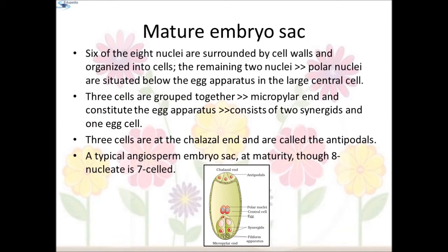In the mature embryo sac, six of the eight nuclei are surrounded by cell walls and organized into cells; the remaining two nuclei, called polar nuclei, are situated in the large central cell. Three cells are grouped at the micropylar end and constitute the egg apparatus, which consists of two synergids and one egg cell. The synergids have special cellular thickening at the micropylar tip called the filiform apparatus, which plays an important role in guiding the pollen tubes into the synergid. Three cells at the chalazal end are called the antipodals. The largest central cell has two polar nuclei. This is a typical angiosperm embryo sac — at maturity, though eight-nucleate, it is a seven-celled structure.